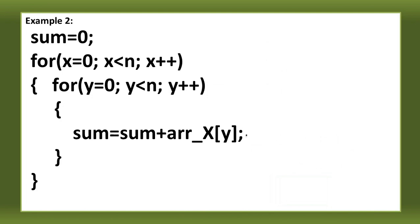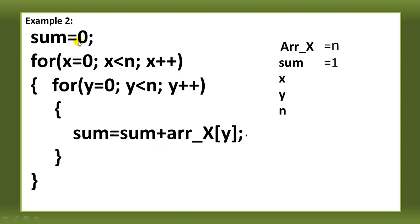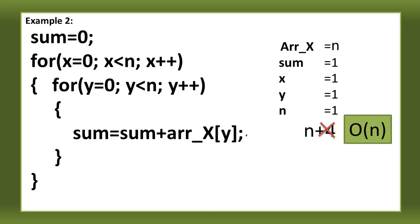Now for the space complexity of example 2. We have ARR[x] (space = n), sum (1), x (1), y (1), and n (1). Adding: n + 4. Removing the constant 4, we get n. So the space complexity of this algorithm is O(N).